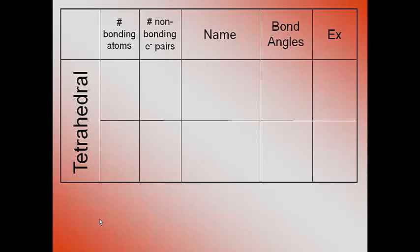Remember, the tetrahedral molecule had four bonding atoms, no non-bonding electron pairs because it was a carbon in the center. So now, what I'm going to do is I'm going to take one of those bonding atoms off, and I'm going to replace it with a non-bonding electron pair.